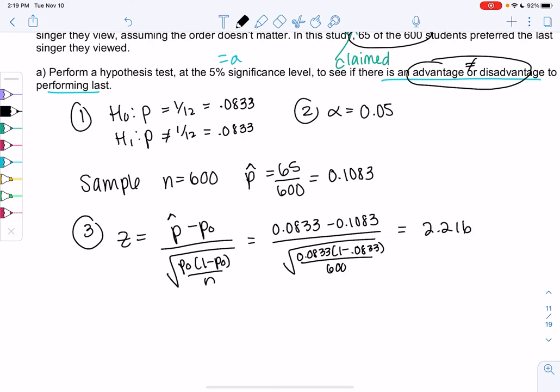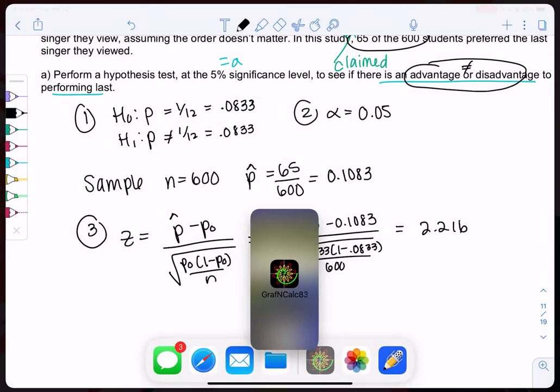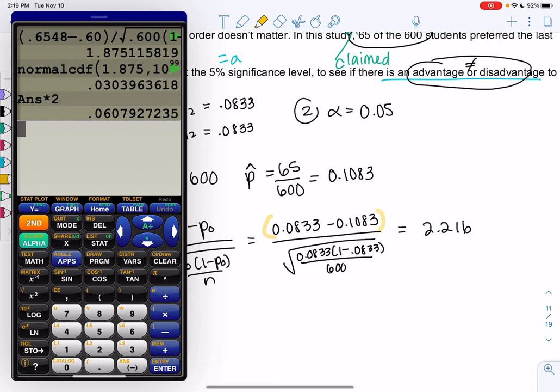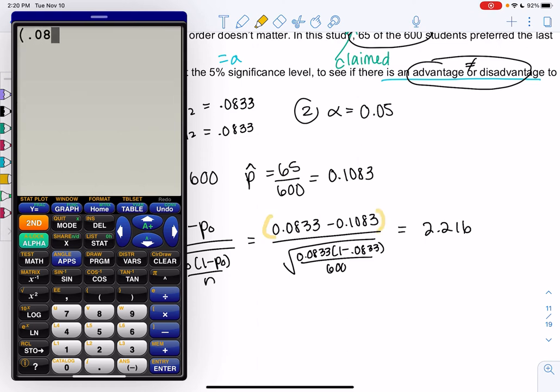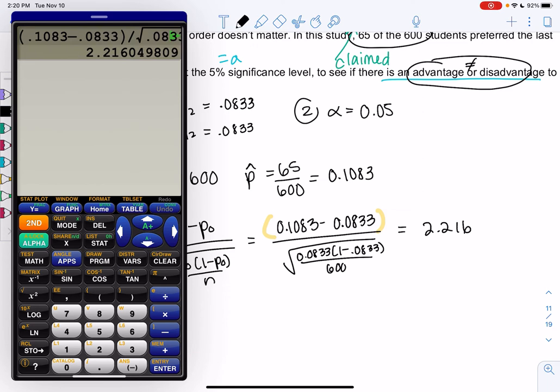P hat minus p0 all over that square root. So if you're feeling confident, pause the video and plug in. And then check back with me. So go ahead and pause. And I got 2.216. And if you didn't get this number, I can show you how that works on the calculator. So I put the top in parentheses. Oops, I did the top backwards, but my answer is correct. The sample value comes first. Hypothesis value comes second. And we get 2.216. So maybe I am rejecting, right? This is beyond two standard deviations. So maybe this was strong enough evidence. But let's find the p-value.